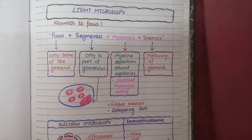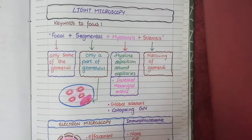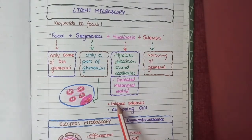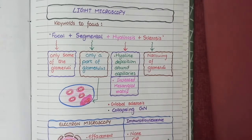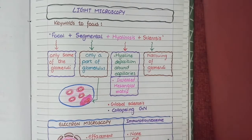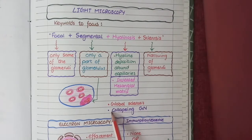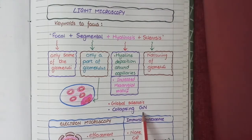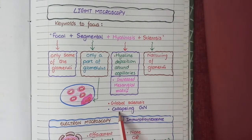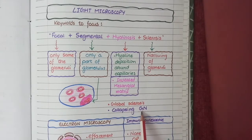There are also variants of focal segmental glomerulosclerosis. One is global sclerosis, where the pattern of involvement is not confined to some glomeruli but affects all glomeruli in the kidney. Another variant is collapsing glomerulonephritis, in which the glomeruli tend to collapse due to formation of fibrous tissue.